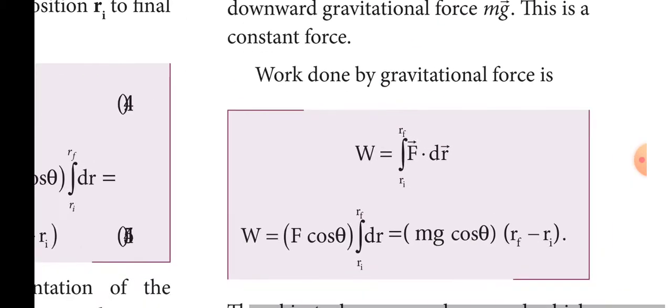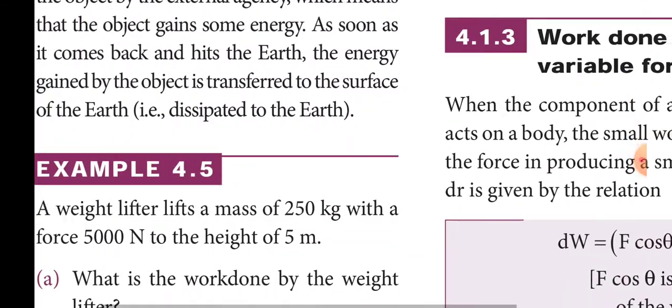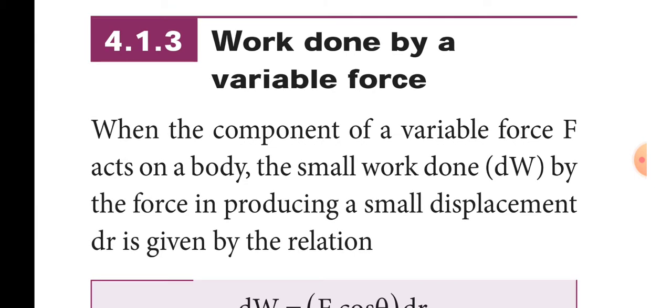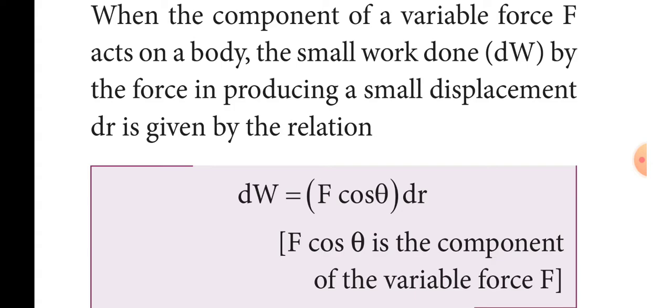The second topic that may be asked is work done by a variable force. The same process is applied. When the component of a variable force F acts on a body, the small work done dW by the force in a small displacement dr is given by dW = F·cosθ·dr, where F·cosθ is the component of the variable force F.